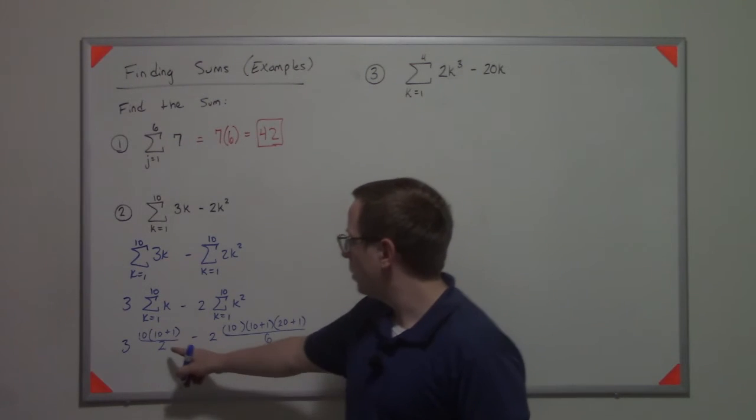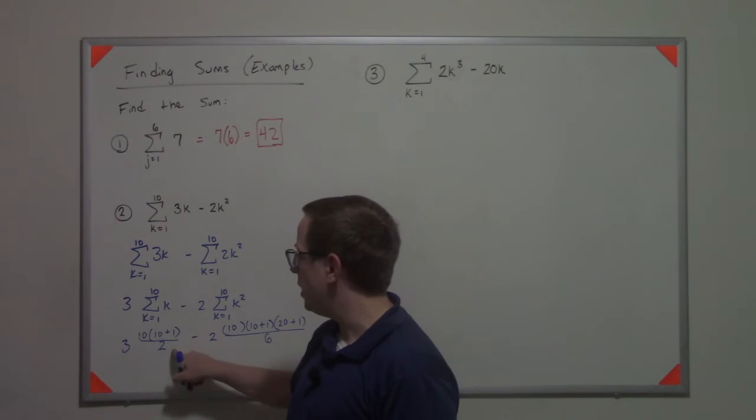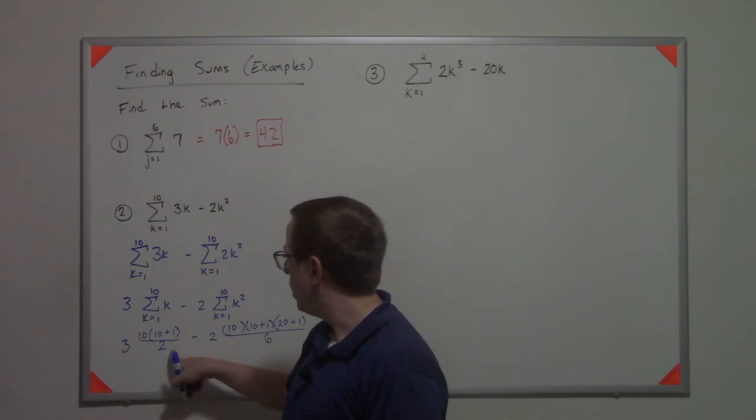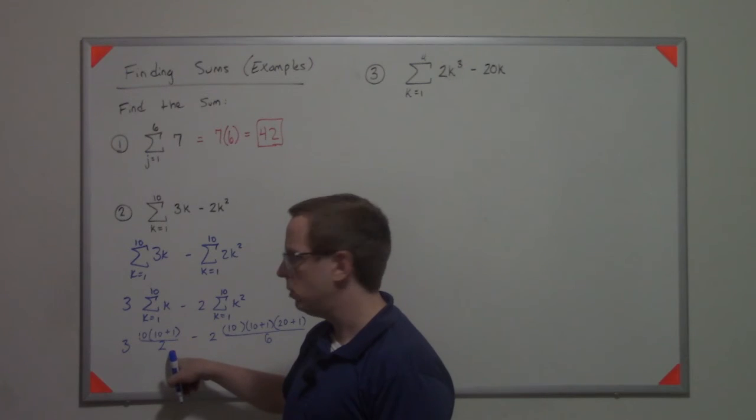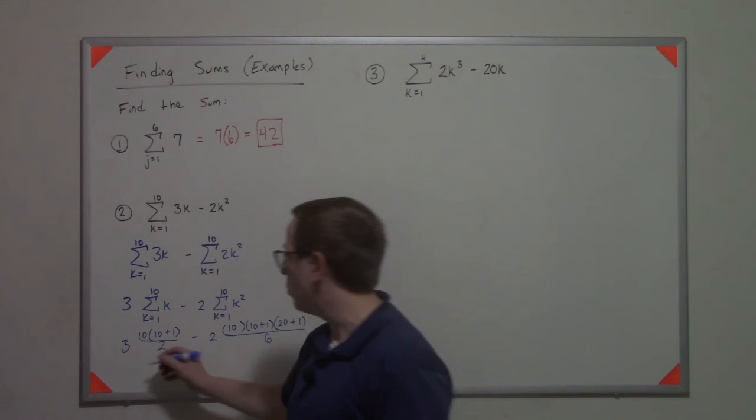Now we're gonna do some simplification. This is gonna be 110 over 2, which is 55. And so, is that right? 55 times 3 is 165.